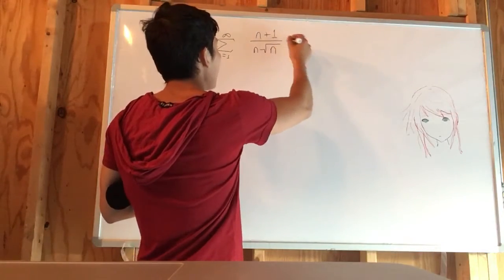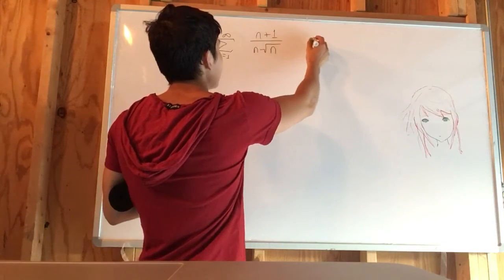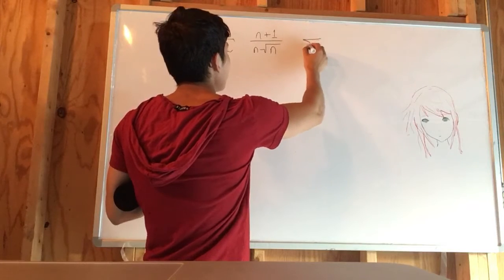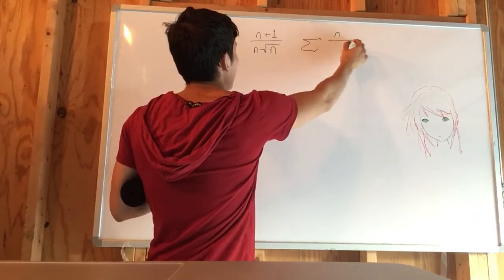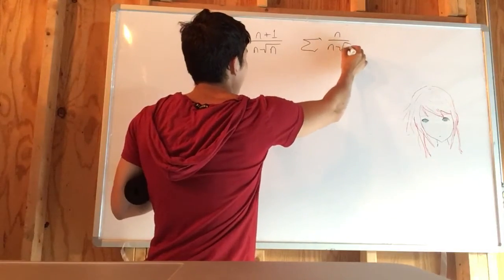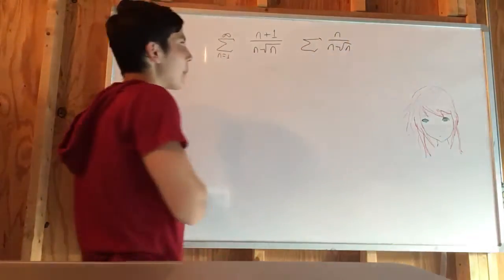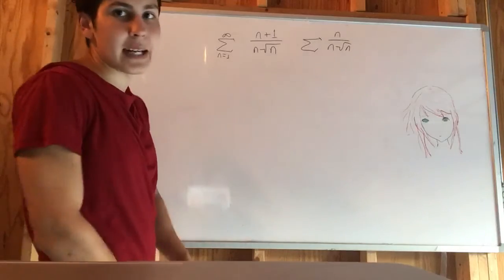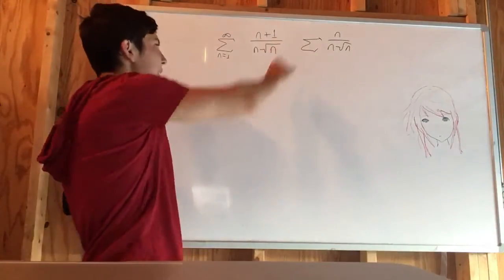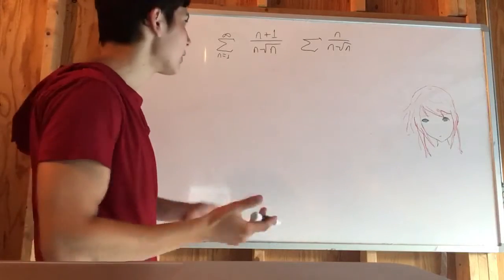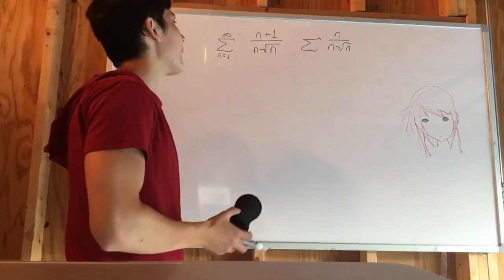So, for example, we know that this is very close to a sum in which we would just have n over n square root of n. Because adding 1, does that really make that much of a difference? They're pretty similar. We can intuit that they're of the same kind of thing.